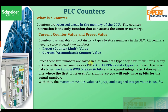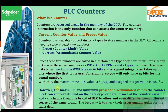Since these two members are saved in a certain data type they have their limits. Many PLCs save these two numbers as word or integers. From our lesson on data types, a word takes 16 bits and a signed integer also takes 16 bits, with the first bit used for signing. This means the maximum word value is 65,535 and a signed integer's maximum value is 32,767. It is important to note that the maximum and minimum preset and accumulated values depend on the data type and data format of the counter variable, and can change from one PLC brand to another. Always check the programming guide for each vendor.